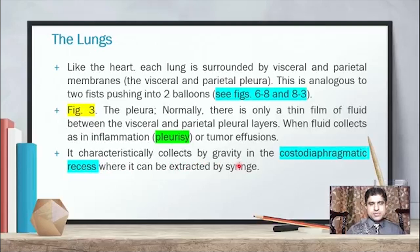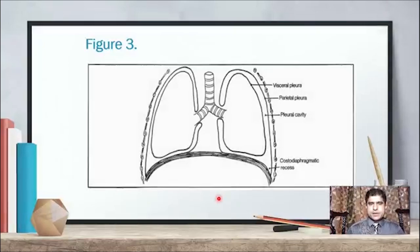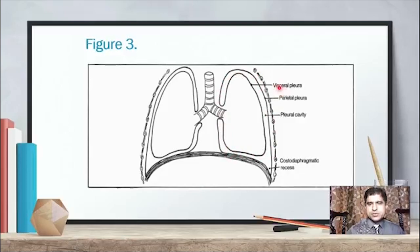This fluid characteristically collects by gravity in the costodiaphragmatic recess — an area between the ribs and the diaphragm — where it can be extracted by syringe. Looking at the structure in figure 3, the visceral pleura is the innermost layer, and the parietal is the outer layer. In between is the pleural cavity where pleural fluid flows.